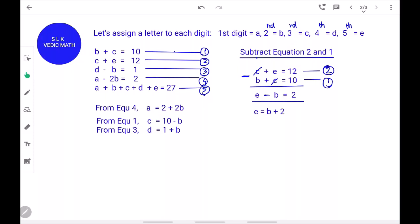From equation 4, we got the A value which is A minus 2B equal to 2. When we bring this minus 2B to the other side, it becomes plus 2B. So, A equal to 2 plus 2B.